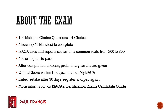ISACA uses a scaled scoring system from 200 to 800. Some questions are practice or research questions not counted toward your total score. You need a 450 or higher to pass, which is roughly 56–57%. However, because of the different weighting per question, as a rule of thumb you should target 85% on practice exams to be confident you'll pass.